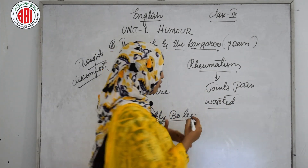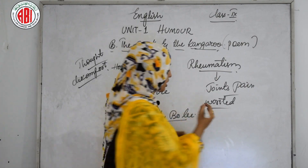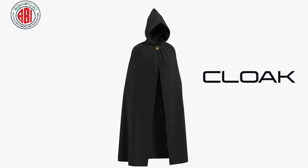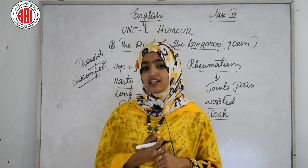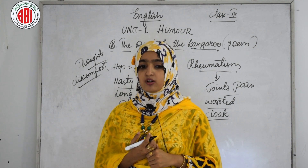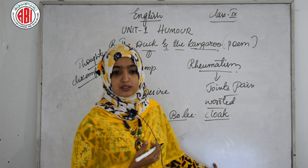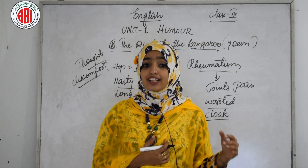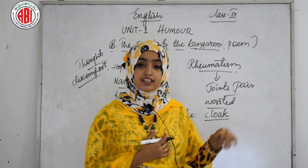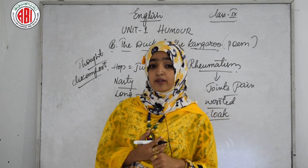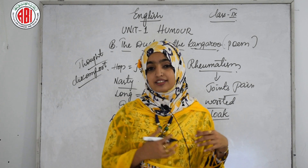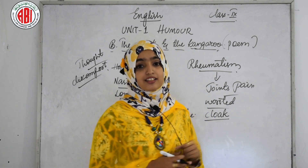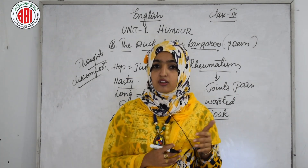'And to keep out the cold, I have bought a cloak.' A cloak is a loose, usually sleeveless garment that acts as an overcoat to protect from heat or cold. The duck says: 'And every day a cigar I will smoke, all to follow my own dear true love of a kangaroo.' It is saying it bought a cloak for warmth and will smoke a cigar every day — doing all this just to follow the kangaroo out of true love.